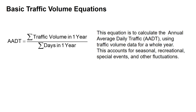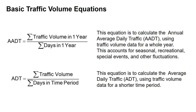Our AADT, the annual average daily traffic, is just the sum of the traffic volume in one year divided by the number of days in that year. That accounts for seasonal, recreational, and special event fluctuations throughout the year. The ADT uses a very similar equation, but it's just the traffic volume over the number of days in the time period — typically less than a year, a much shorter time period than our AADT.